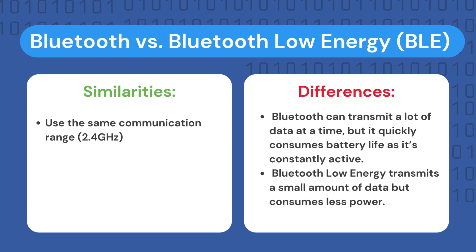Classic Bluetooth can transmit a lot of data at a time, which makes it quickly consume its battery life, making it more practical for applications designed to broadcast media, such as Bluetooth-enabled headsets, speakers, and keyboards. Unlike classic Bluetooth, Bluetooth Low Energy remains in sleep mode unless a connection is initiated. The actual connection time only lasts a few milliseconds, during which a small amount of data transfer happens, rather than being constantly active. Therefore, BLE is used for applications that do not need to exchange large amounts of data and can run on battery power at a cheaper cost.